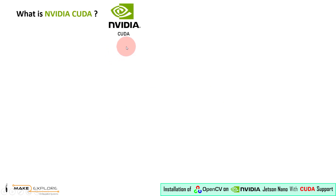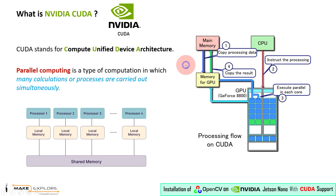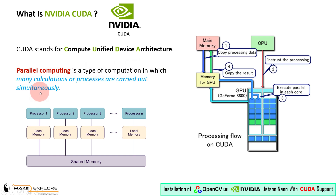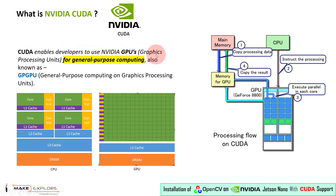So what is CUDA? CUDA stands for Compute Unified Device Architecture. It is a parallel computing platform and programming model developed by NVIDIA. CUDA enables developers to use NVIDIA GPUs — graphics processing units — for general-purpose computing, also known as GPGPU, general-purpose computing on graphics processing units.